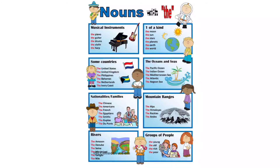We use 'the' before nationalities, for example: the Chinese, the American. Before the names of mountain ranges: the Himalayas, the Alps, the Rockies, the Andes. Before the names of rivers: the Ganga, the Jamna. Before the names of groups of people: the young, the old, the rich, the poor.